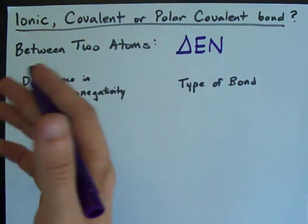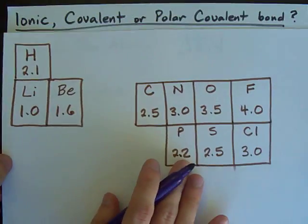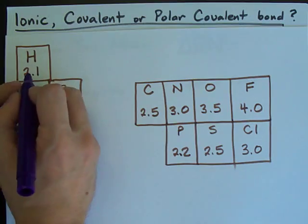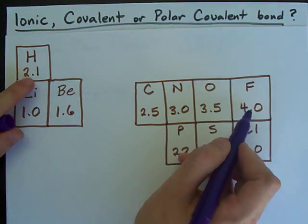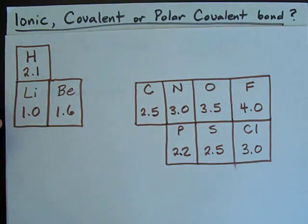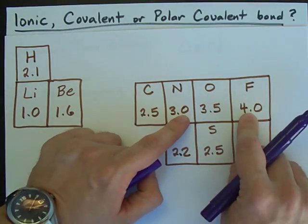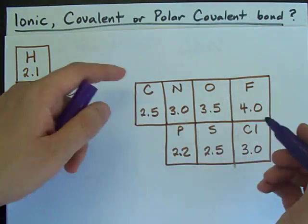You calculate the difference in electronegativity between the two atoms. For example, the difference between H and F is 1.9. The difference between N and F is 1.0. See, I'm just taking the difference between the two.